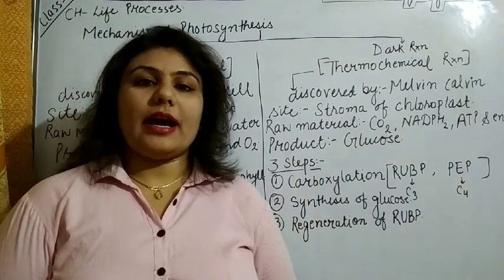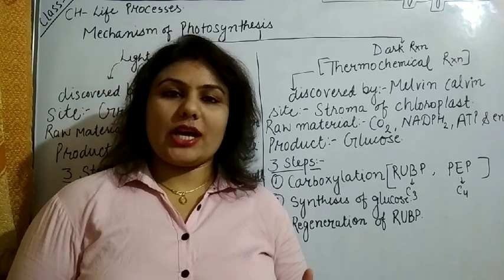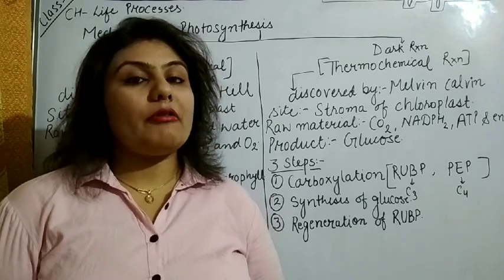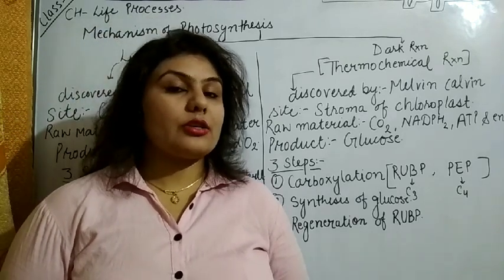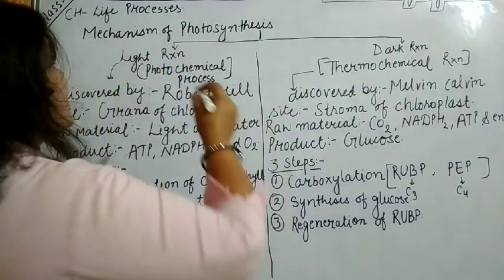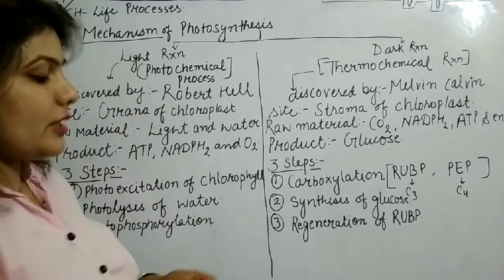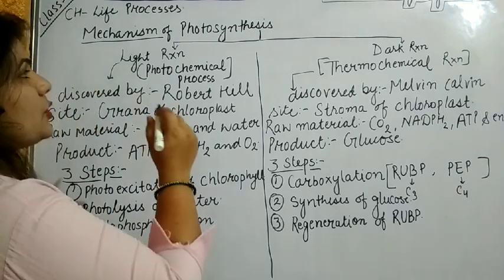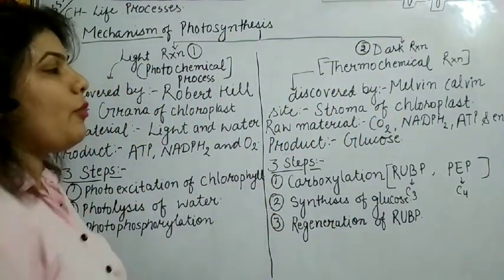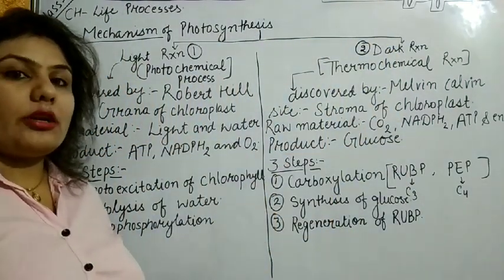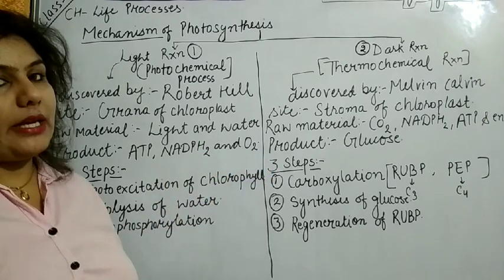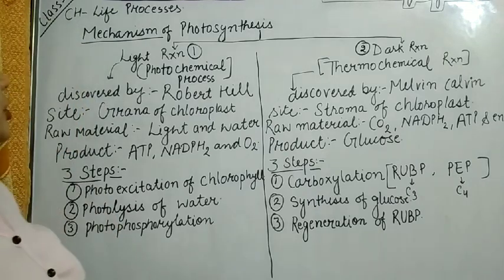Hello, my dear students, welcome back again to your favorite channel Science Era by Dr. Priyanka Sanyi. In the last class we discussed about the process of photosynthesis in the form of an equation, but today we are going to discuss the mechanism of photosynthesis — how this process takes place. Photosynthesis occurs in two steps: number one is light reaction, and number two is dark reaction. I have prepared very good notes for you in a shortcut method so you can note it down. This is your five-mark question and you can explain it without any problem.